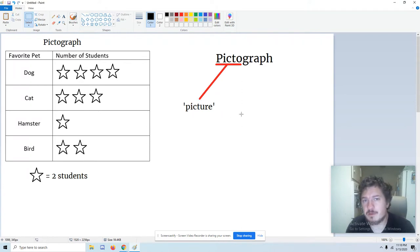So this is a graph with pictures in it. If we look over here, this is a pictograph. You can see I have the title pictograph. And if we read it, it says our first column is our favorite pet. We have dog, cat, hamster, and bird. And on the other side, we have number of students. But instead of numbers, we have little pictures. And even stranger, at the bottom, you can see it says star equals two students.